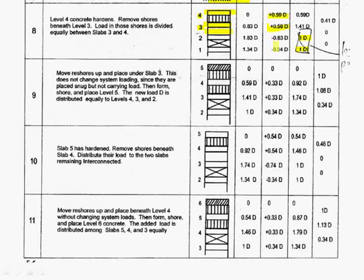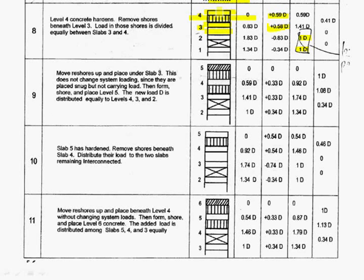You also need to figure out the load on the fourth floor slab, which is here. Because previously the fourth floor slab doesn't carry any weight, but now it's going to carry 0.59D. So 1 minus 0.59D gives you 0.41D, which is the weight carried by the fourth floor of shoring.